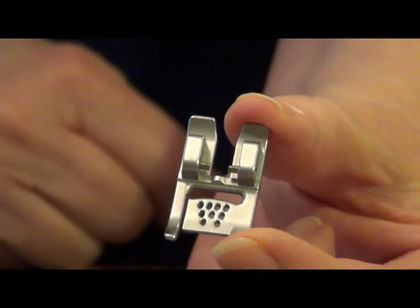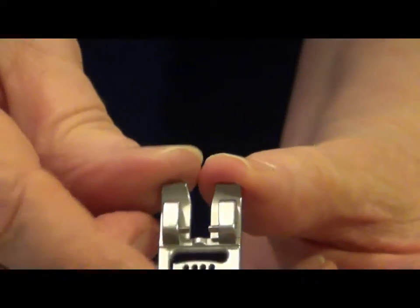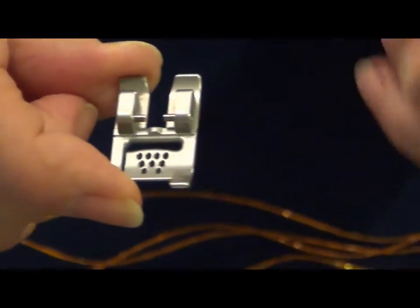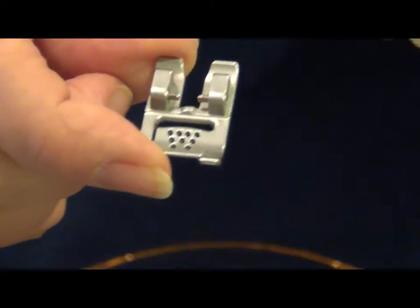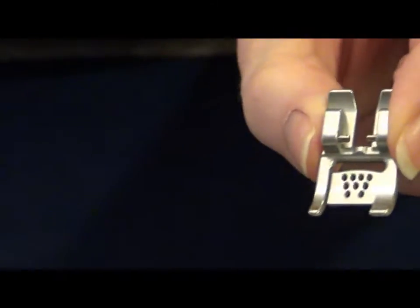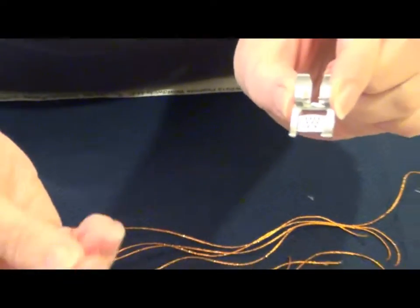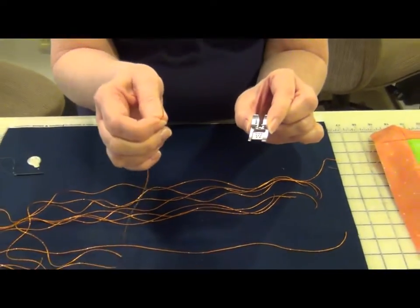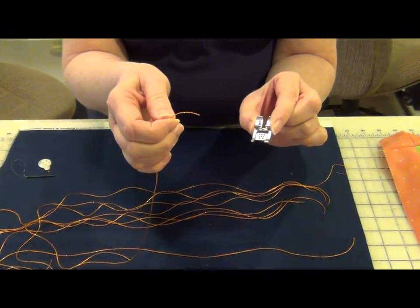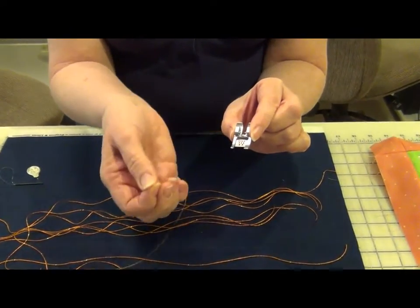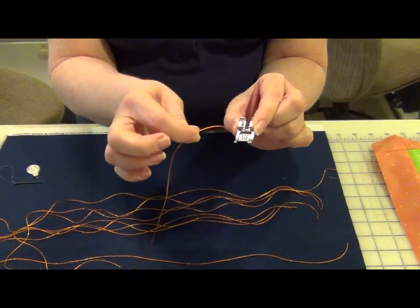When I did use it, I found it to be just an awesome foot and I really enjoyed what I was able to do with it. Basically what you're going to do is take some cording, like I've got here, about like a number five embroidery floss, and we're going to feed a piece of the cording through each of these nine holes.